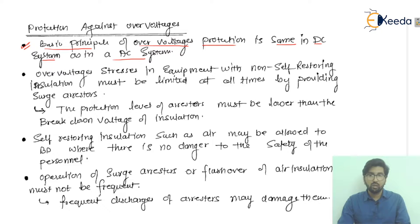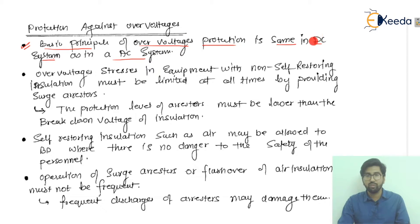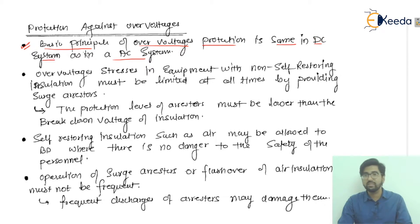The overvoltage protection schemes we are using in the AC system are also used in the DC system — that is, in the HVDC system — but in a kind of advanced version of that.